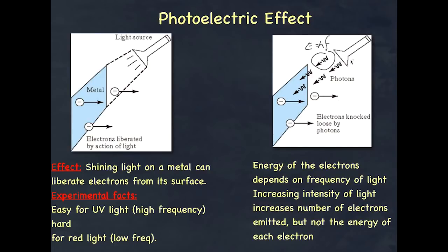What Einstein suggested is that there is a one-to-one relationship: for every photon that arrives at the metal, one photon contributes to one electron. This actually explains Lenard's observations. Increasing intensity basically means increasing the number of photons, which means an increasing number of electrons being released — and therefore an increasing current. However, the energy is not related to the number of photons; it is related to the initial energy of each photon.